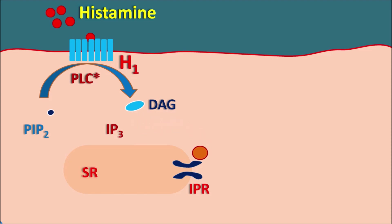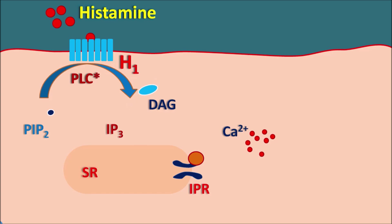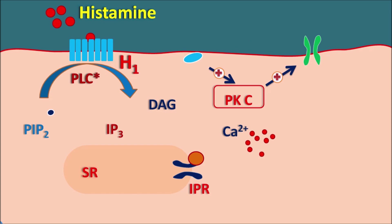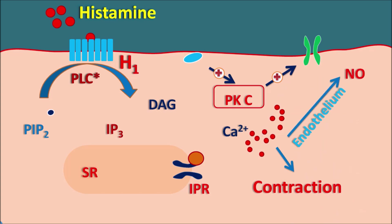When IP3 acts on IP3 receptors, it causes the release of calcium from the sarcoplasmic reticulum. Similarly, diacylglycerol attaches to the cell membrane and activates the enzyme protein kinase C. Protein kinase C stimulates the entry of calcium through calcium channels on the cell membrane, further increasing intracellular calcium levels. Histamine therefore increases intracellular calcium, and as calcium increases it can increase contraction — for example, within the lungs it produces bronchoconstriction, causing congestion and difficulty in breathing.